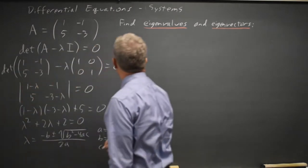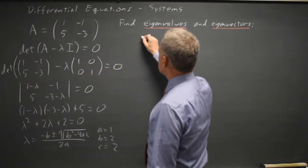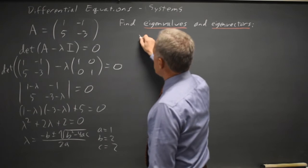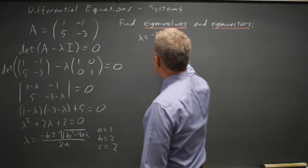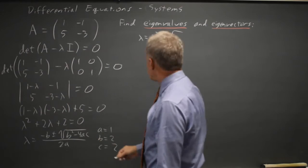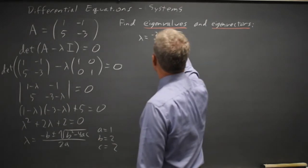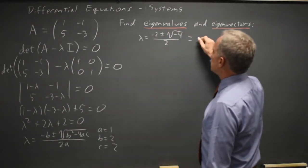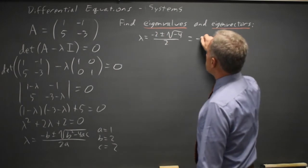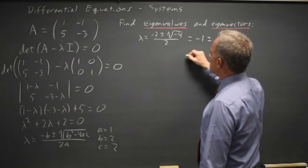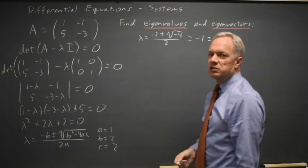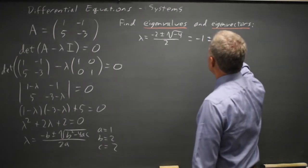And up here, lambda equals negative 2 plus or minus root 4 minus 8 is negative 4 over 2. So lambda equals negative 2 over 2 is negative 1, plus or minus square root negative 4 is 2i, and 2i over 2 is i.